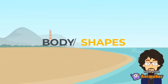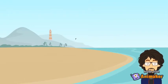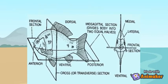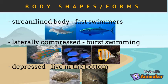Fish exhibit bilateral symmetry, which means what is seen in the left half can also be seen in the right half. The fish body shape is directly related to its lifestyle. Fast-swimming fish have a streamlined body that helps them move through the water column. This includes sharks, tuna, and tuna-like species.